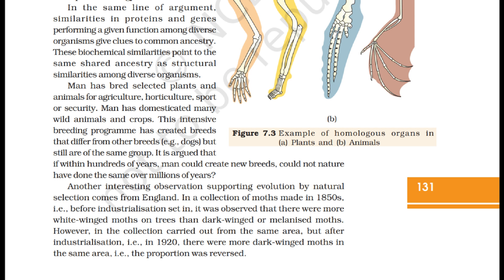Man has bred and selected plants and animals for agriculture, horticulture, sport or security. Man has domesticated many wild animals and crops. This intensive breeding program has created breeds that differ from other breeds — for example, dogs — but are still of the same group. It is argued that if within hundreds of years man could create new breeds, could not nature have done the same over millions of years?